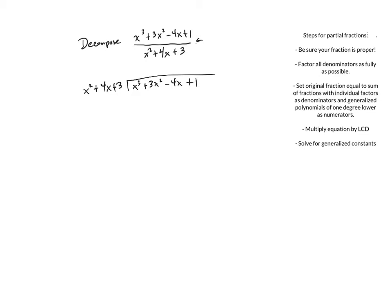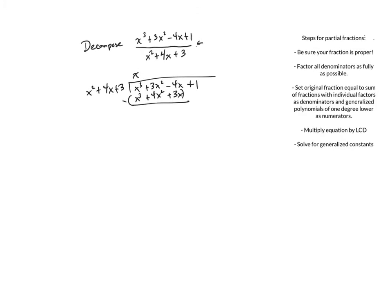The rhythm for polynomial long division is divide, multiply, subtract, bring down. Dividing x cubed by x squared gives x; multiplying back gives x cubed plus 4x squared plus 3x; subtracting leaves negative x squared minus 7x. Bring down a term and repeat: negative x squared divided by x squared is negative 1; multiplying gives negative x squared minus 4x minus 3; subtracting leaves remainder negative 3x plus 4.